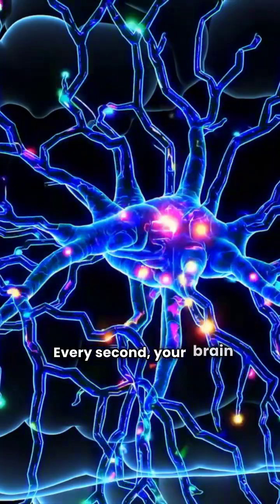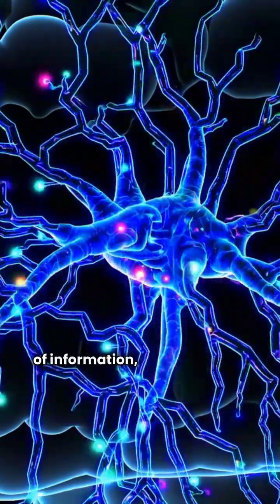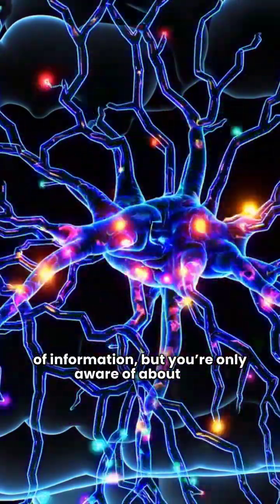Every second, your brain processes around 11 million pieces of information, but you're only aware of about 40.